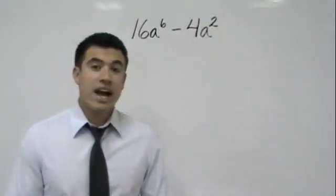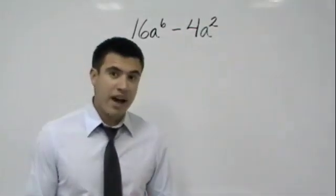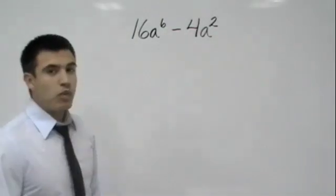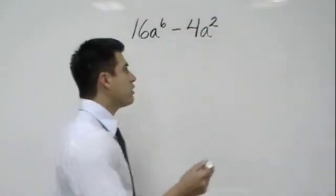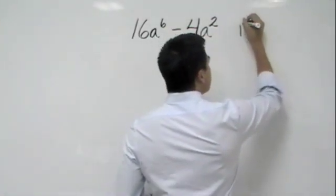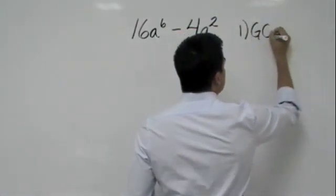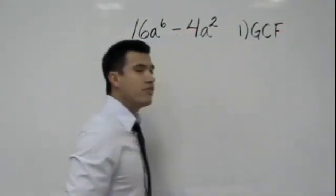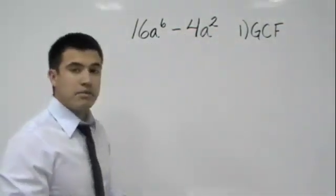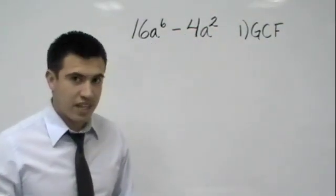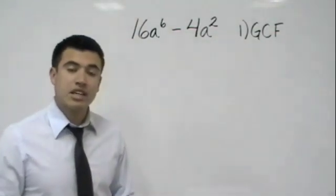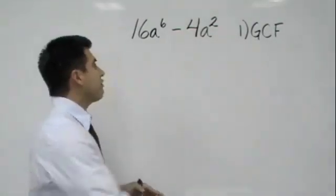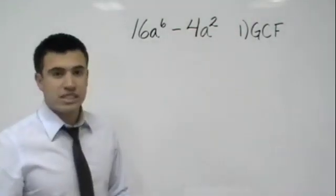One thing that I had mentioned when factoring was that we always want to remember to take out the greatest common factor first. That would always be our first step. Now, that's not going to change even when we're doing difference of squares, because we're still factoring. So all the time, we want to go ahead and make sure we take out the greatest common factor. It will make factoring difference of squares much easier.